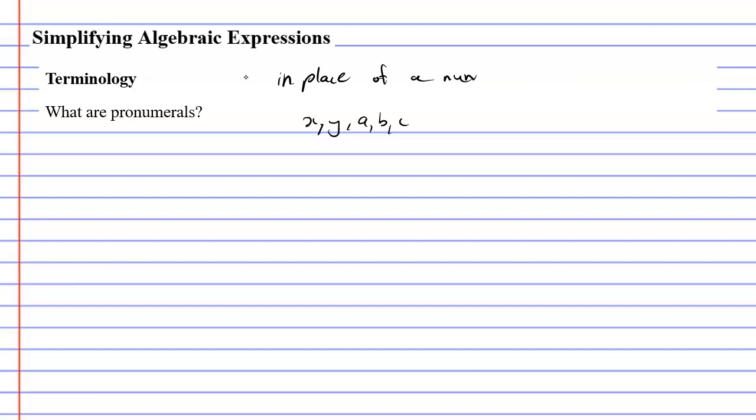Okay, so we usually use letters in place of numbers. But it really just has to be any symbol. So I could use something such as a smiley face. Any symbol that you can think of can be used in place of a number. And these symbols are called pronumerals.